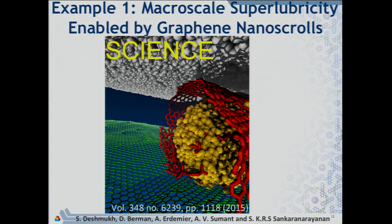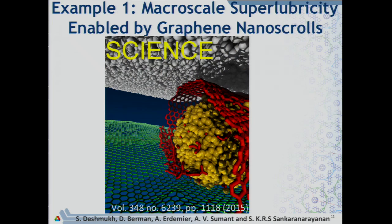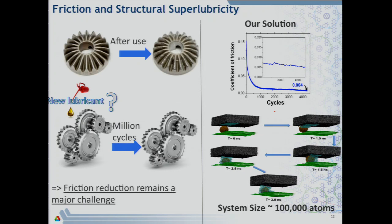We use atomistic models to understand friction and test whether empirical friction laws valid at the macroscale hold at the nanoscale. We discovered a phenomenon called superlubricity — friction between two sliding interfaces drops to near zero. This was never seen at the macroscopic scale before, but using a combination of nanodiamonds and graphene, we could observe this phenomenon under dry conditions at the macroscopic scale. Computations played a key role in both explaining and designing these materials for achieving macroscopic superlubricity.